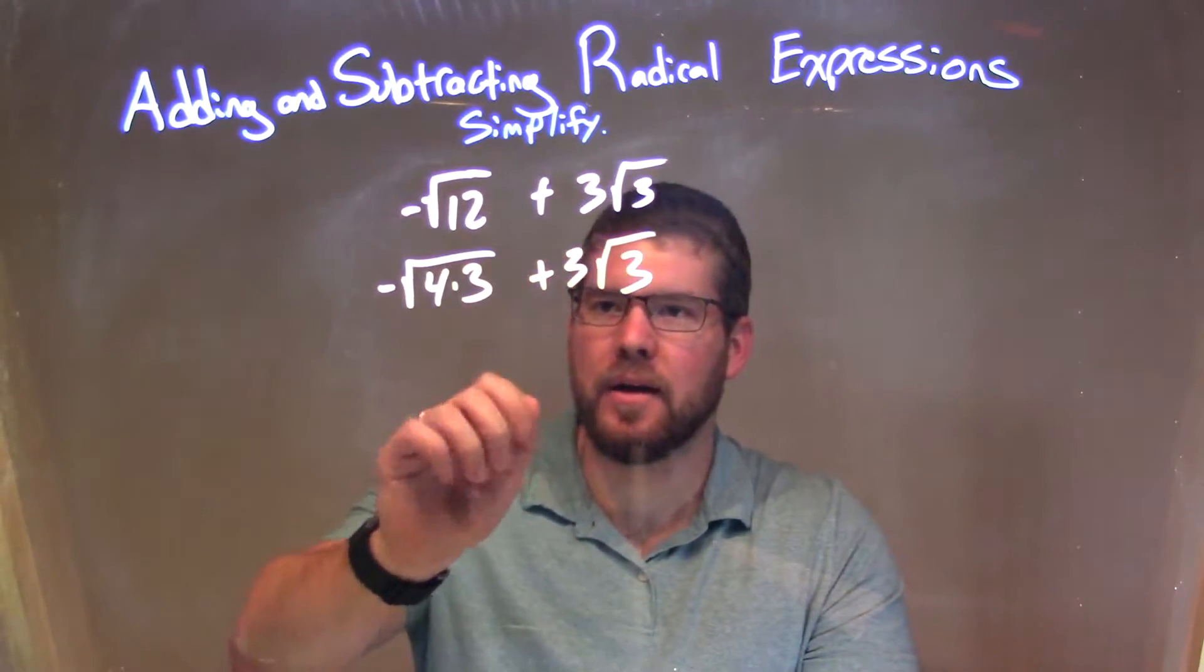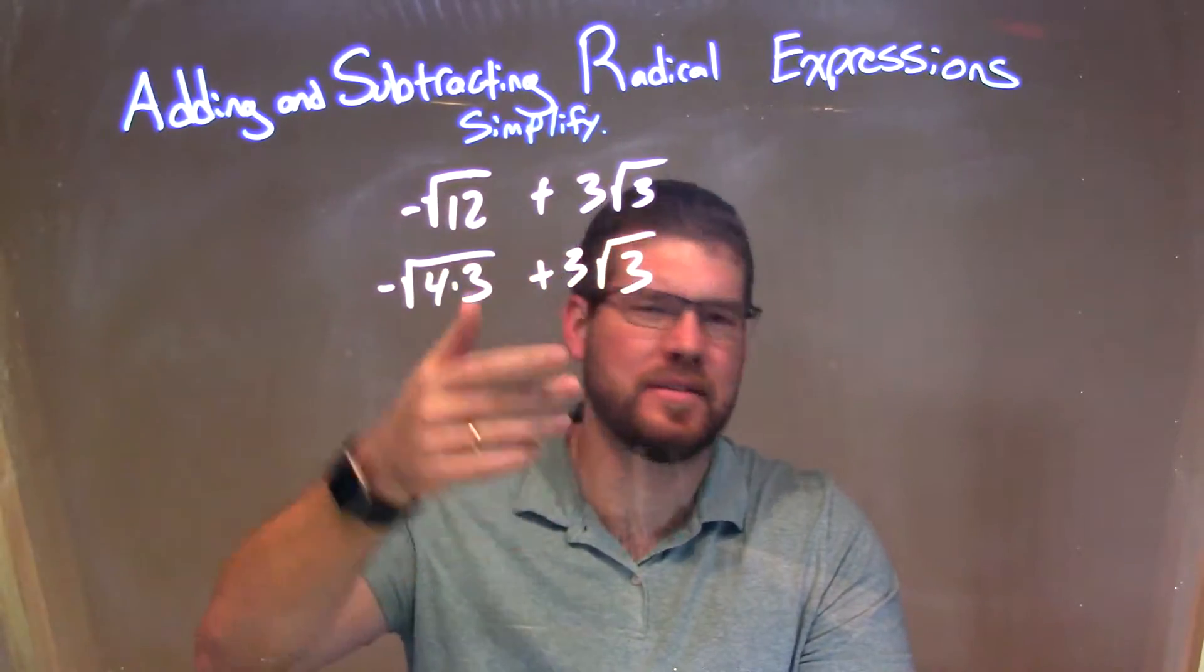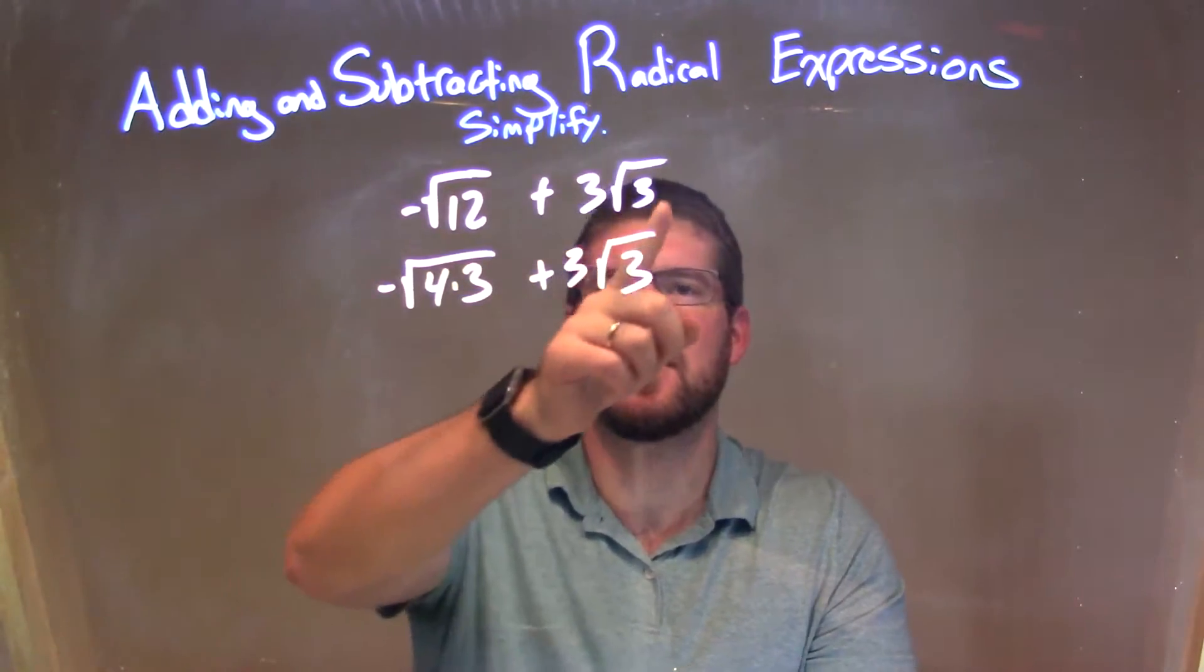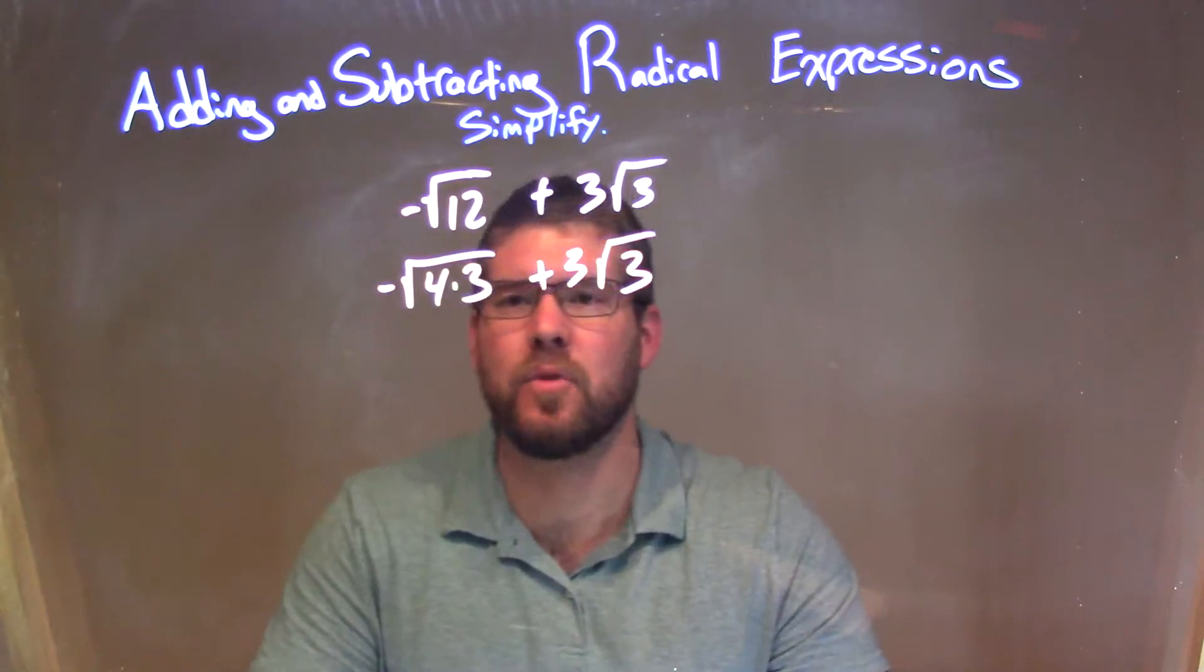And now, since I did that, I chose 4 times 3 instead of 6 times 2, because I saw a 3 there, and I wanted to get a 3 somewhere in that square root.